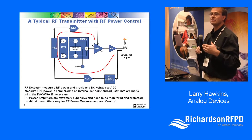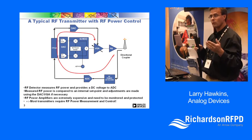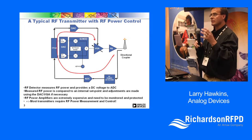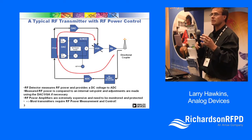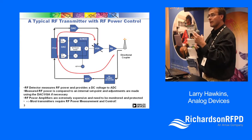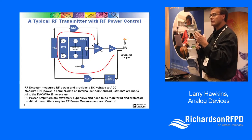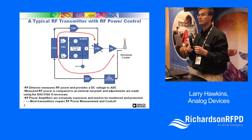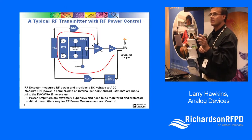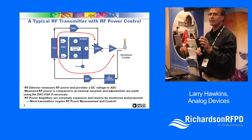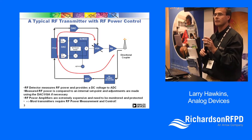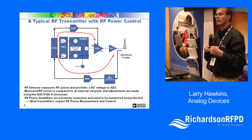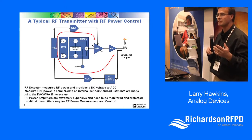If the FCC says the maximum output is one watt, and the power detector performance changes over temperature, then you have to back off the power to make sure you never send more than one watt into the air. You want a fairly accurate power detector so you can send as much power as possible, because that helps the link budget.